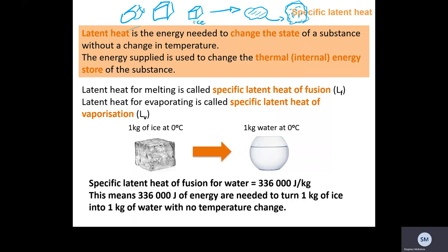Latent heat is the energy needed to change the state of a substance without changing its temperature. Ice will stay at zero degrees Celsius until it is fully melted into water. The energy supplied is used to change the internal energy store of the substance — the energy makes particles vibrate faster, which causes a change of state, but it does not cause an increase in temperature.